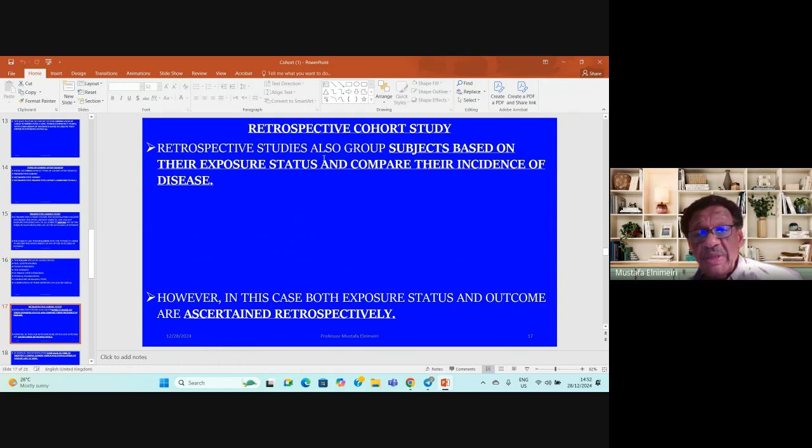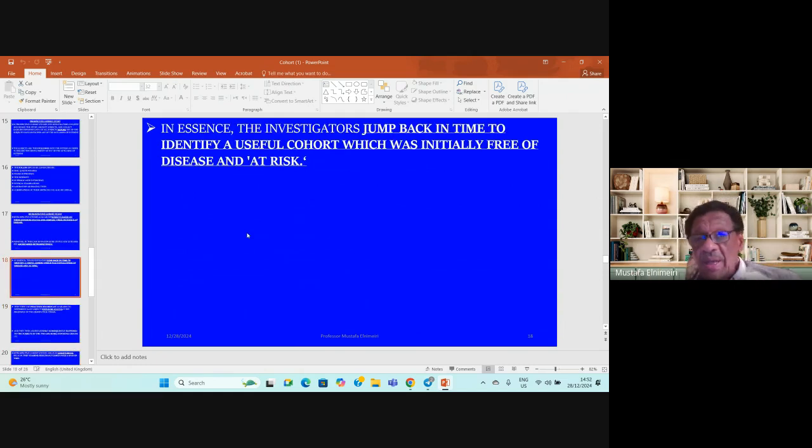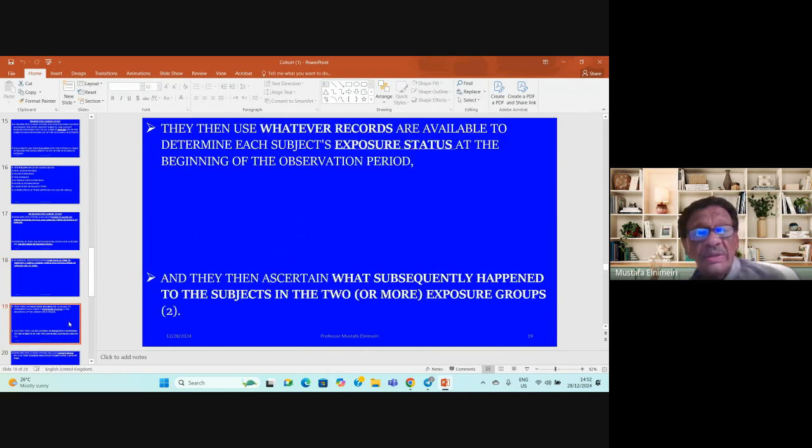In retrospective cohort study, studies also group subjects based on their exposure status and compare them for disease. However, both exposure status and outcome are ascertained retrospectively. In essence, investigators jump back to identify a useful cohort which was initially free of the disease based on records, then use whatever records are available to determine subject exposure status at the beginning of their observation period and what subsequently happened to the subject among the two groups.